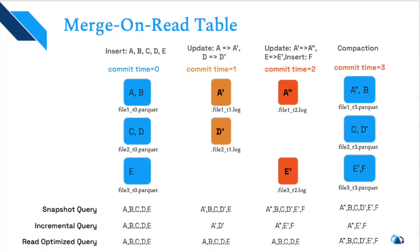At time T1, A is updated to A' and D to D'. Running a snapshot query returns A', B, C, D', E. An incremental query returns only A' and D' — the changed records. However, the read-optimized query still returns A, B, C, D, E — because the updates are still sitting in the log file and have not been compacted yet into the base file.